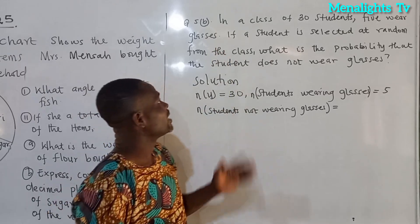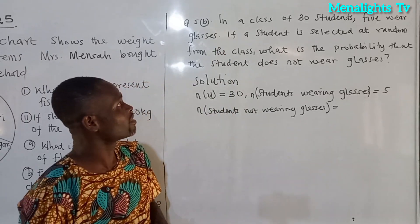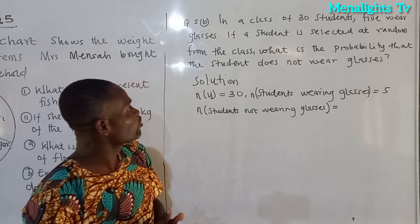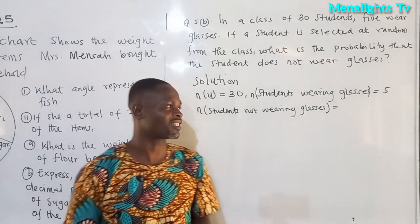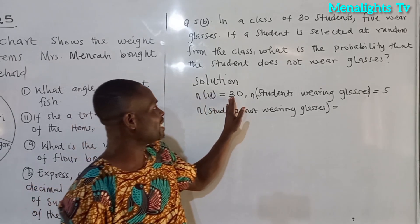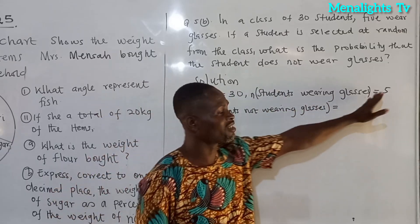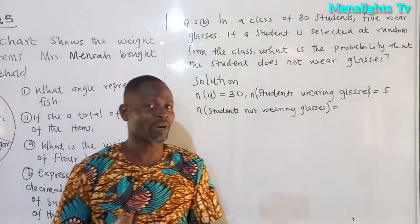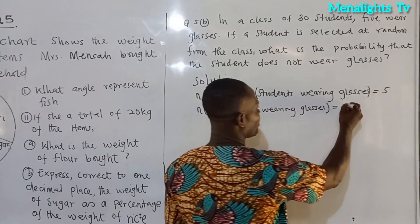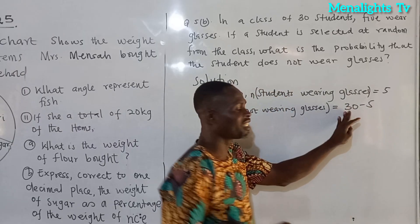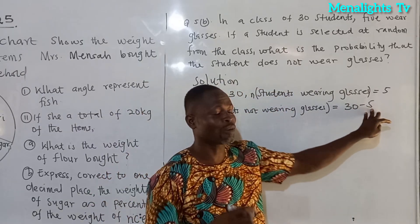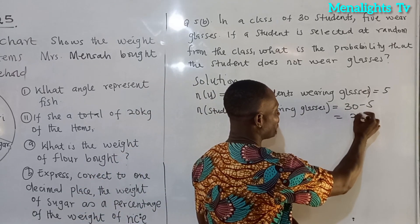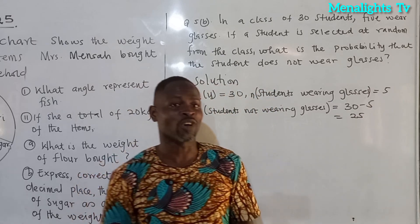Now question 5b: in a class of 30 students, 5 wear glasses. If a student is selected at random, what is the probability that the student does not wear glasses? The total number of students is 30. The number of students wearing glasses is 5. So the number of students not wearing glasses is 30 minus 5, which gives us 25 students not wearing glasses.